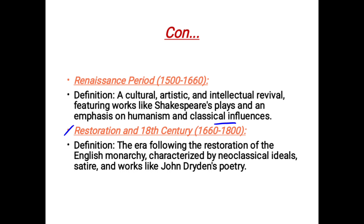The fourth period is the Restoration and Eighteenth Century, starting from 1660 to 1800. Its definition is the era following the restoration of the English monarchy, characterized by neoclassical ideals like satire, and works like John Dryden's poetry, who used to criticize. At that time criticism was at its peak.